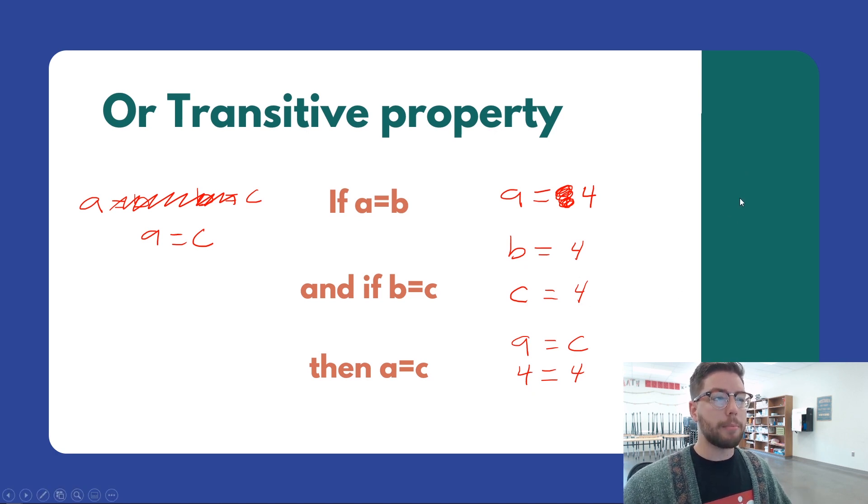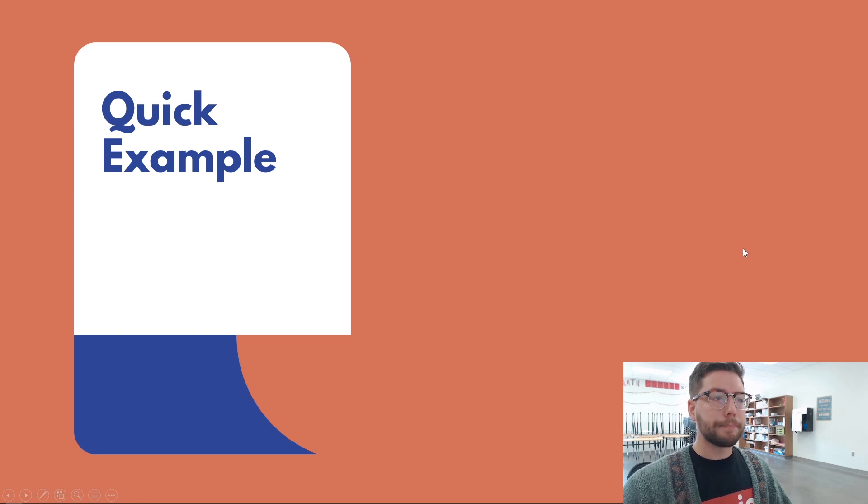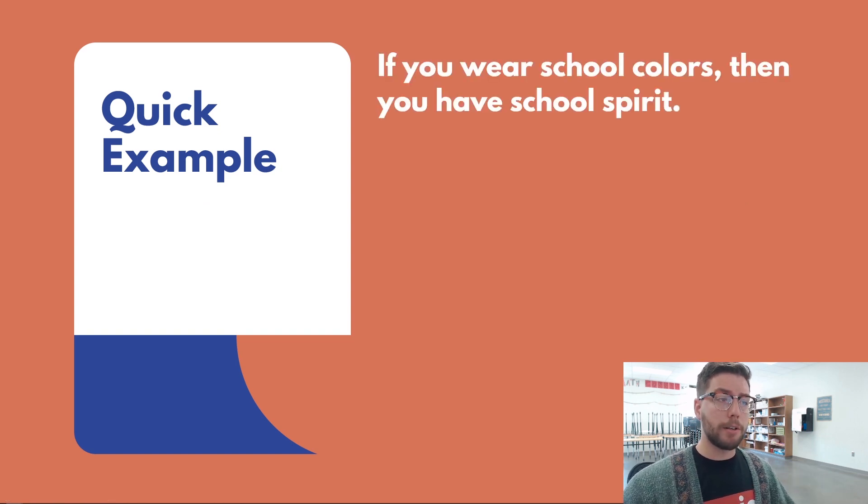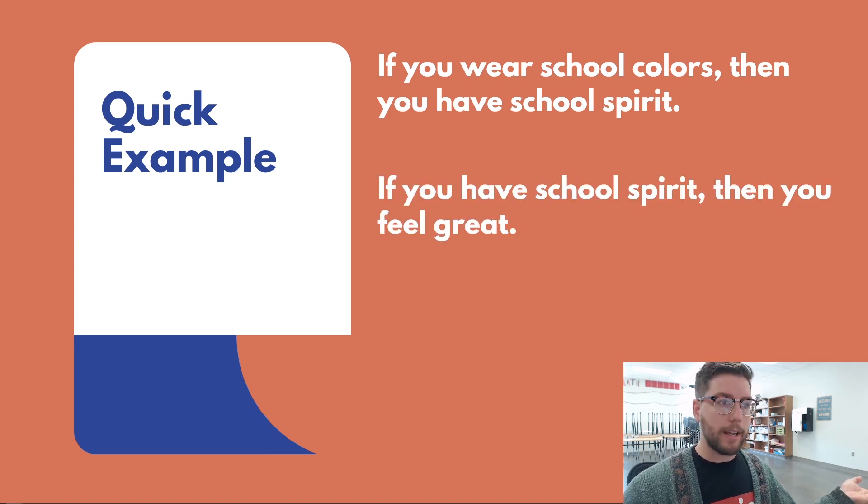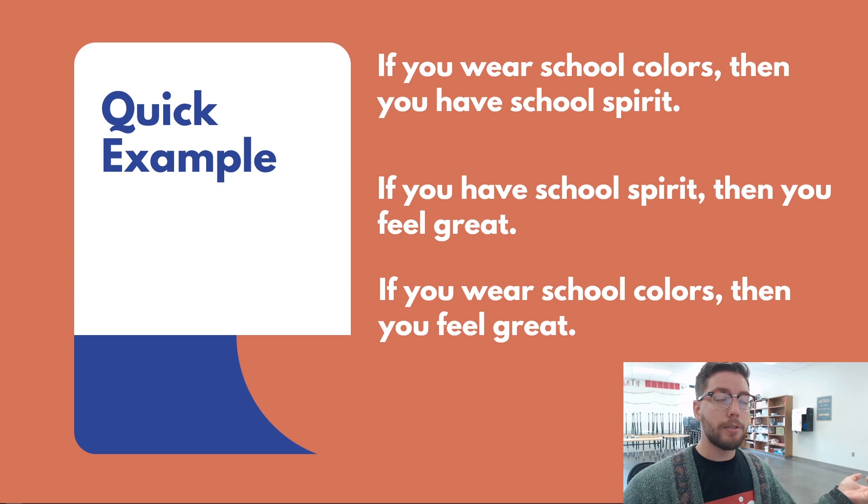Let's look at some more examples. If you wear school colors, then you have school spirit. And if you have school spirit, then you feel great. So if you wear school colors, then you feel great. It's saying this is our A up here—I'm going to use capital A. This is our B, school spirit. And then this is our C. Therefore, A is equal to C.